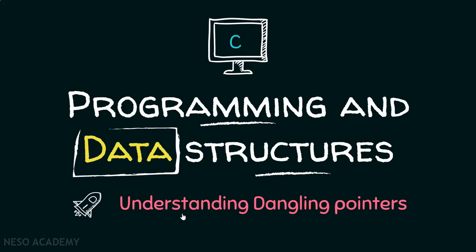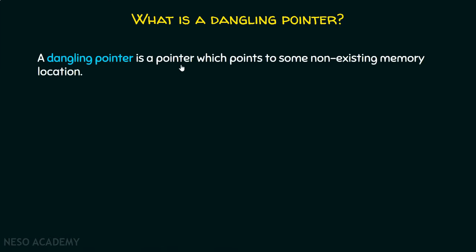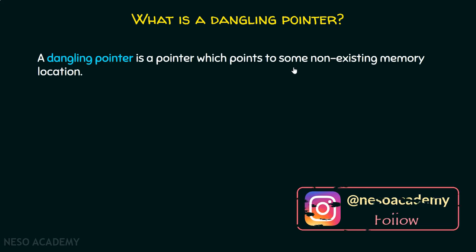In this presentation, we will try to understand what dangling pointers are. A dangling pointer is a pointer which points to some non-existing memory location. It is a special type of pointer.